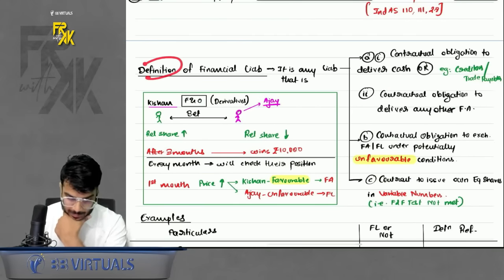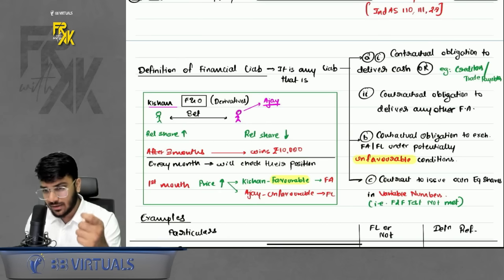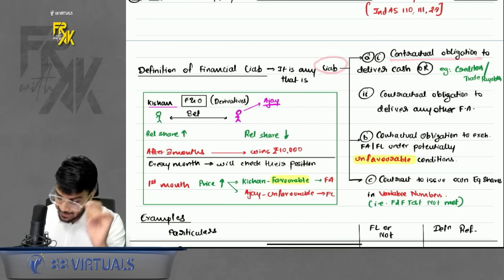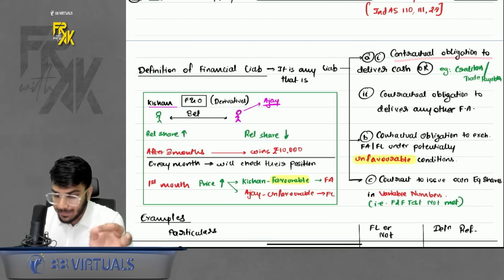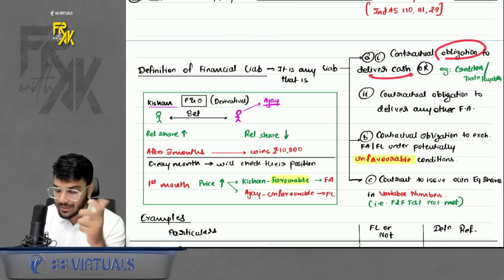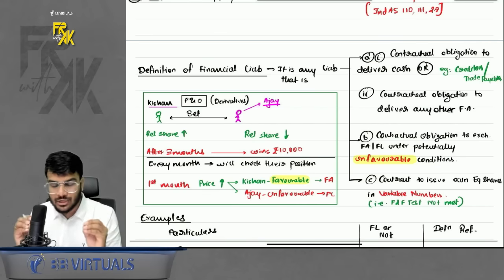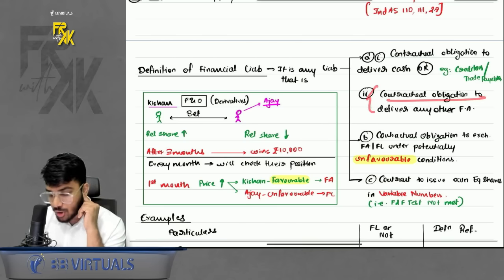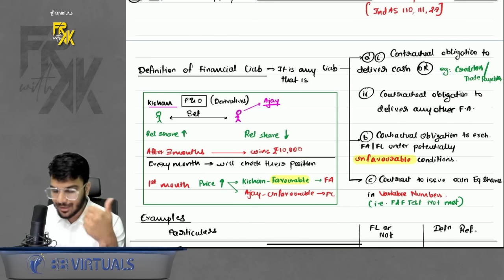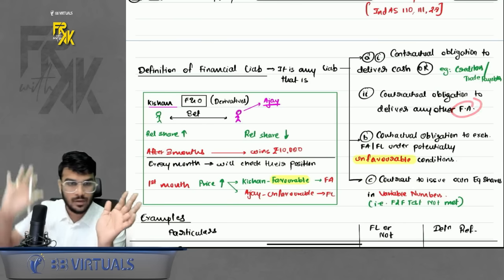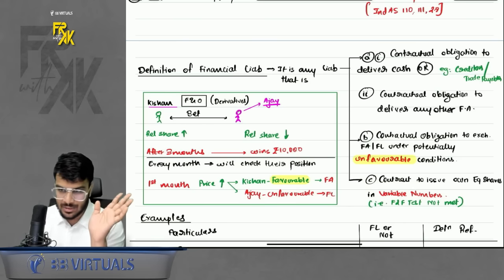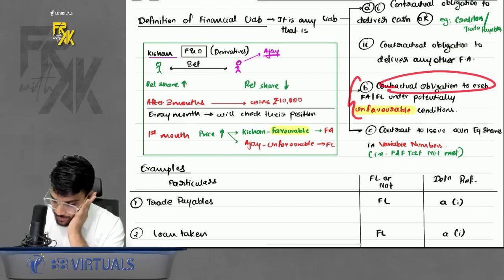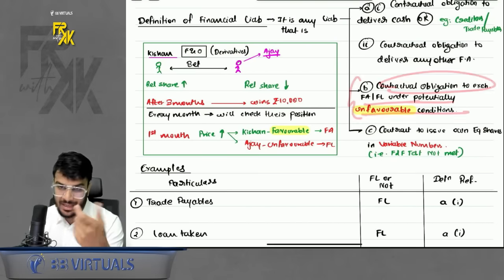Now, the definition of financial liability. It is any liability where you have a contractual obligation to deliver cash — for example, creditors, trade payables, and loans. Or there is a contractual obligation to deliver any other financial asset. If you are delivering cash or any other financial asset, it is a financial liability.